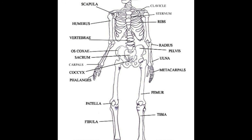Finally, to remember the bone names for the legs, use F P T F T M and P, which stand for femur, patella, tibia, fibula, tarsals, metatarsals, and phalanges.